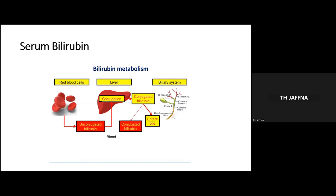Considering the liver function tests, the first one is serum bilirubin. Bilirubin is formed in the body by red blood cell destruction. Initially it is unconjugated bilirubin; conjugation occurs in the liver, and the liver excretes the conjugated bilirubin. It enters as bile through the common bile duct and enters the intestine.